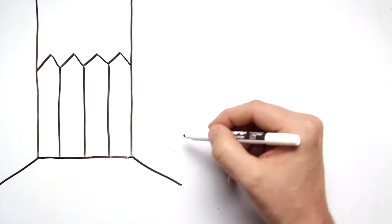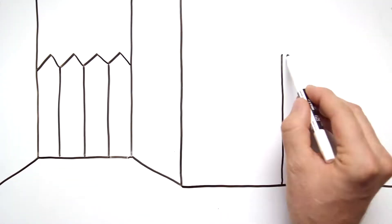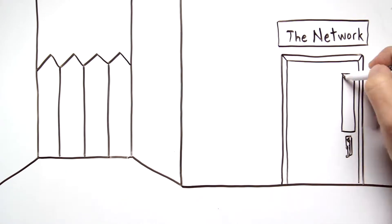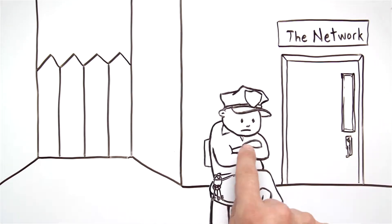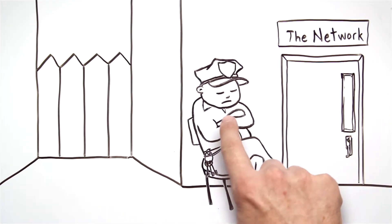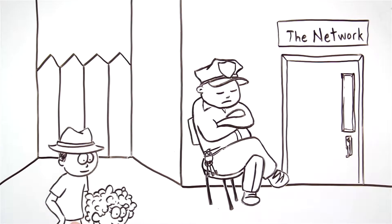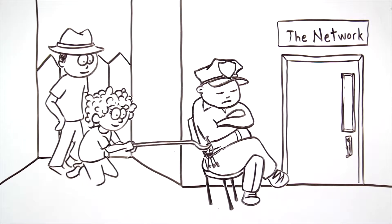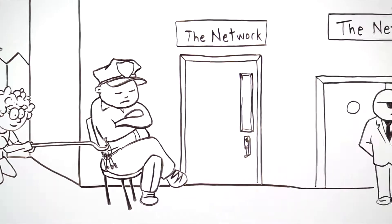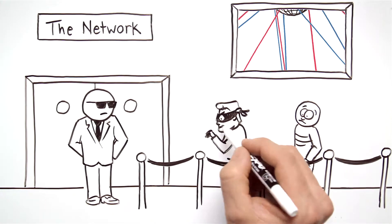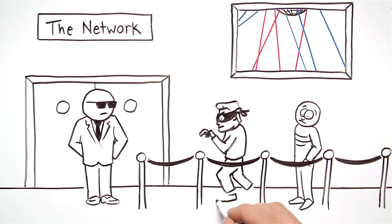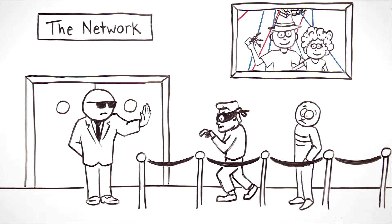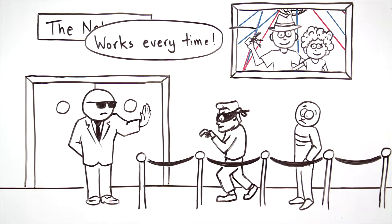We're sorry to be the ones to tell you, but if you're trusting perimeter security devices to protect your network, you aren't as safe as you think. That's because modern malware is becoming increasingly sophisticated and more evasive than ever. Your signature-based perimeter controls could be blocking the known threats but leaving you totally exposed to unknown threats and targeted attacks.